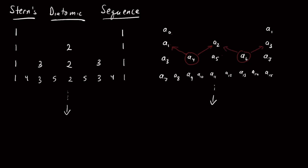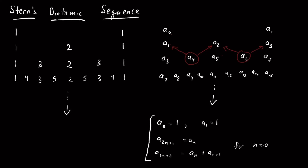This leads us to a rather nice formula — a recursion for this sequence. We have A0 equals 1, A1 equals 1, A sub 2n+1 equals A sub n, and A sub 2n+2 equals A sub n plus A sub n+1. This holds for n greater than or equal to 0. This is what's called Stern's Diatomic Sequence, and that's what we'll study today.